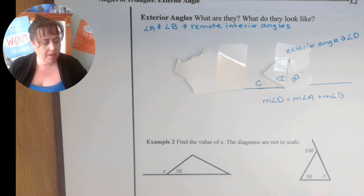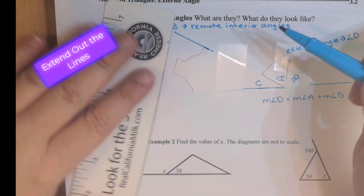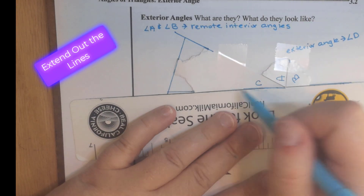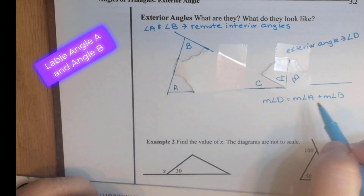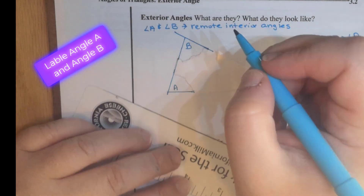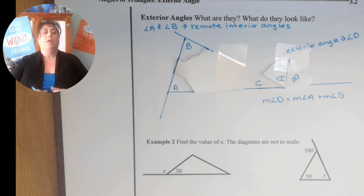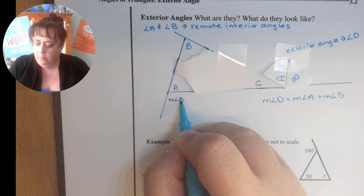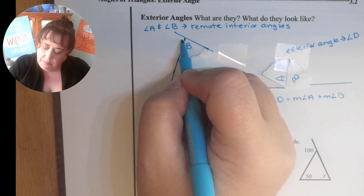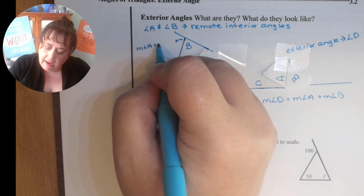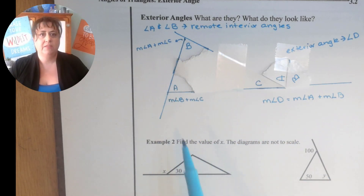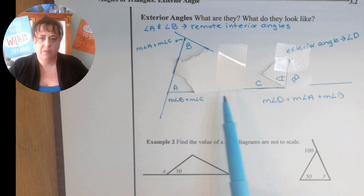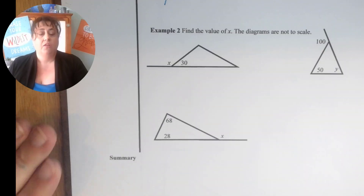Let's neaten this diagram up so it makes sense. What I just did there is put in the other exterior angles. This one would be the measure of angle B and C, and this one would be the measure of angle A and C. When we talk about exterior angles, we go around in a pinwheel — if I make one this way, I keep going around, making that one and then this one.